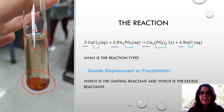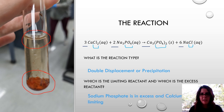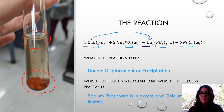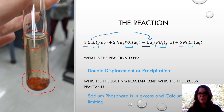This experiment is designed so that each trial has the same limiting reactant and the same excess reactant. Our sodium phosphate is in excess, and our calcium chloride is the limiting reactant. This means the calcium chloride drives how much solid product we can form. When we do our calculations, we can essentially ignore the sodium phosphate and just look at the relationship between calcium chloride and the calcium phosphate we form.